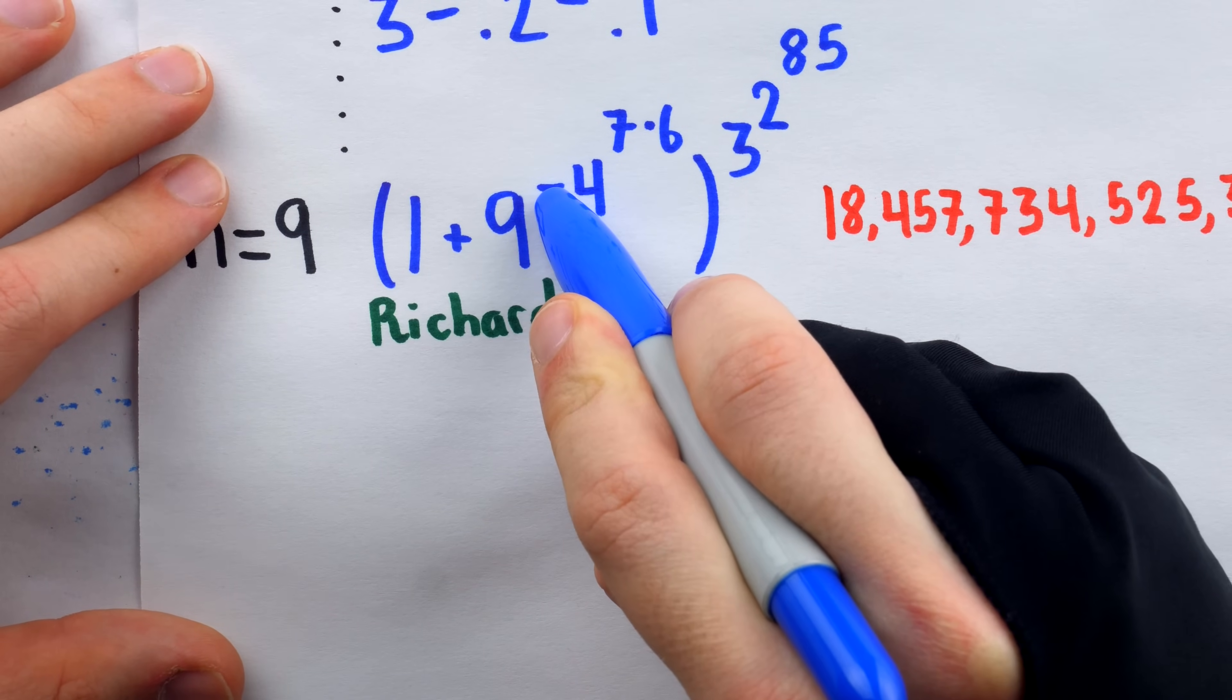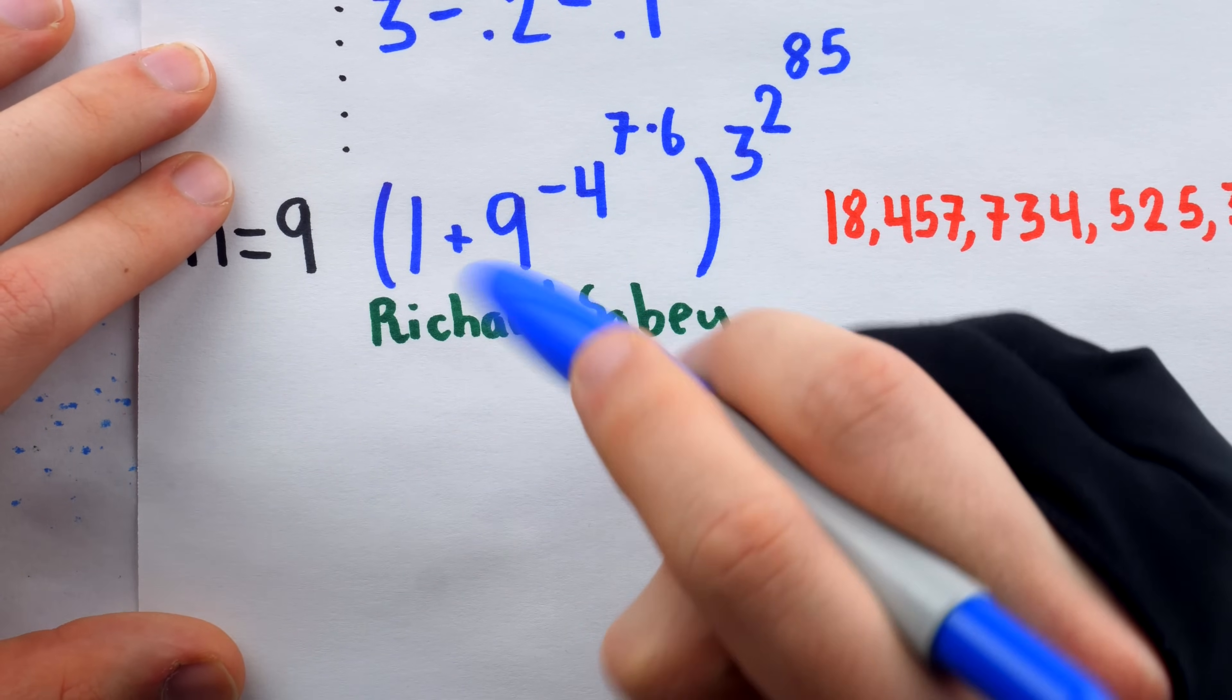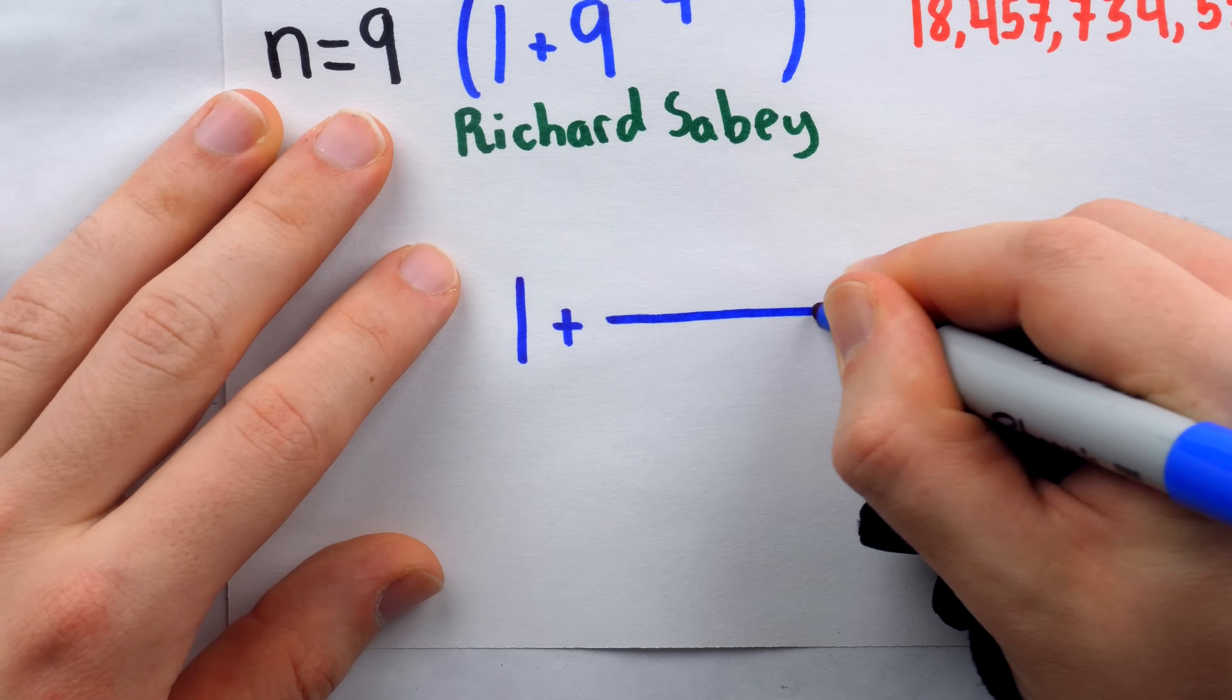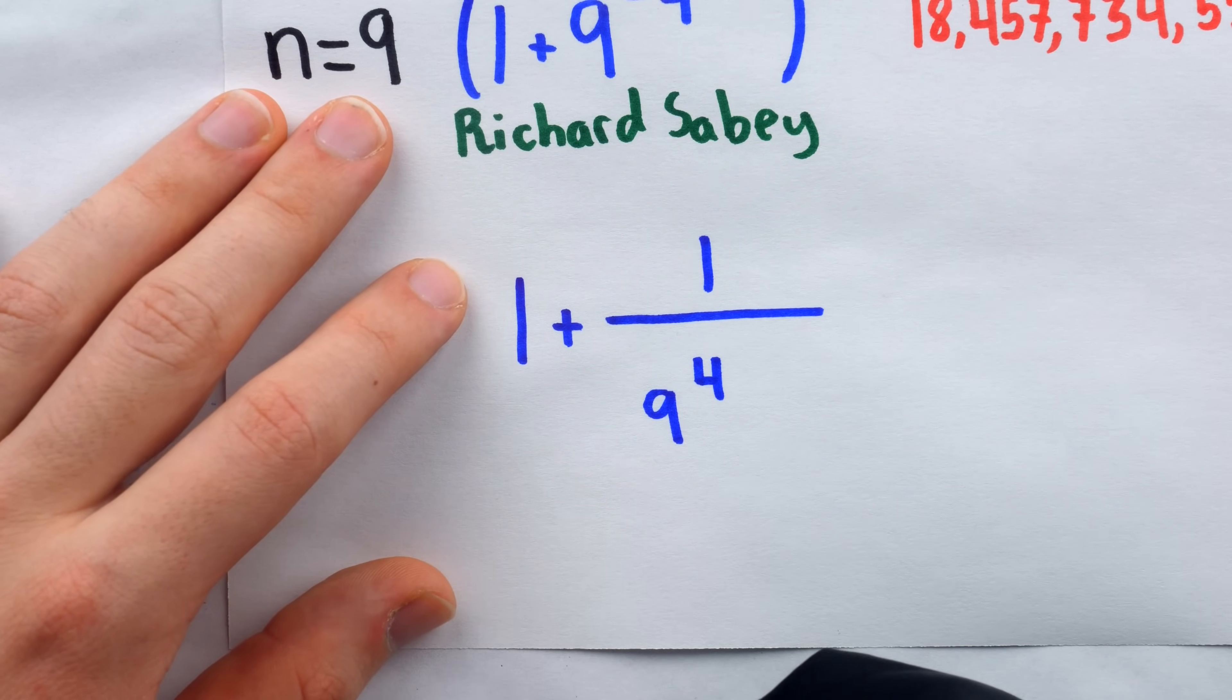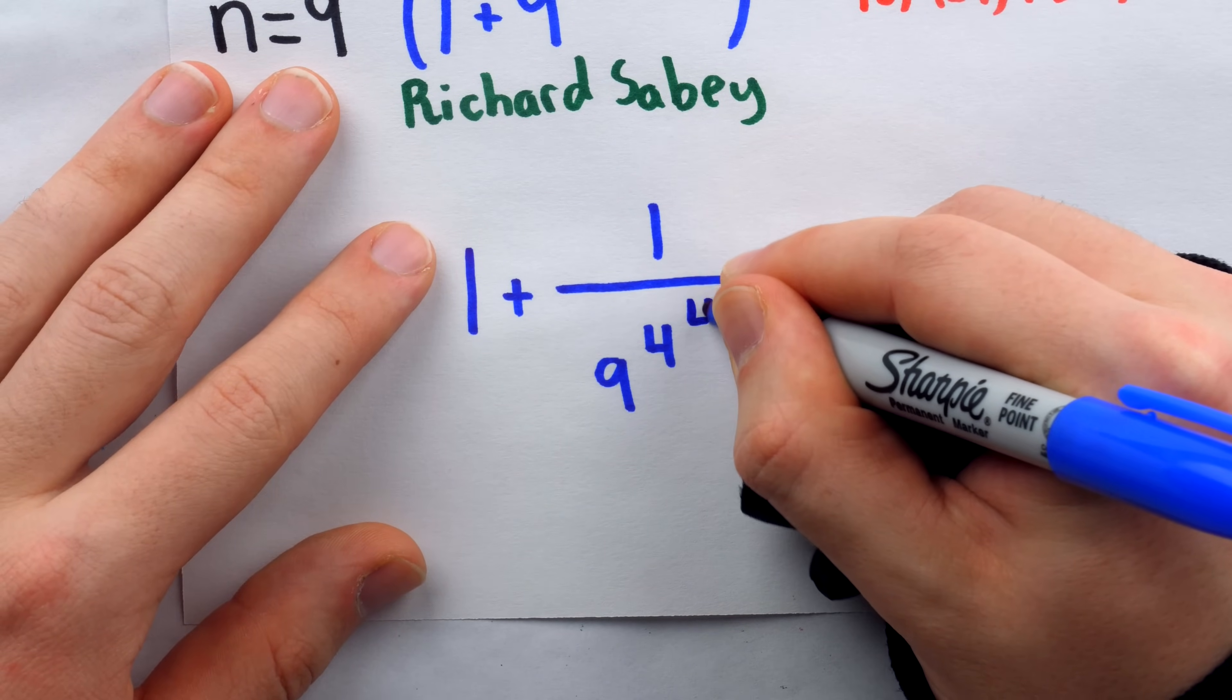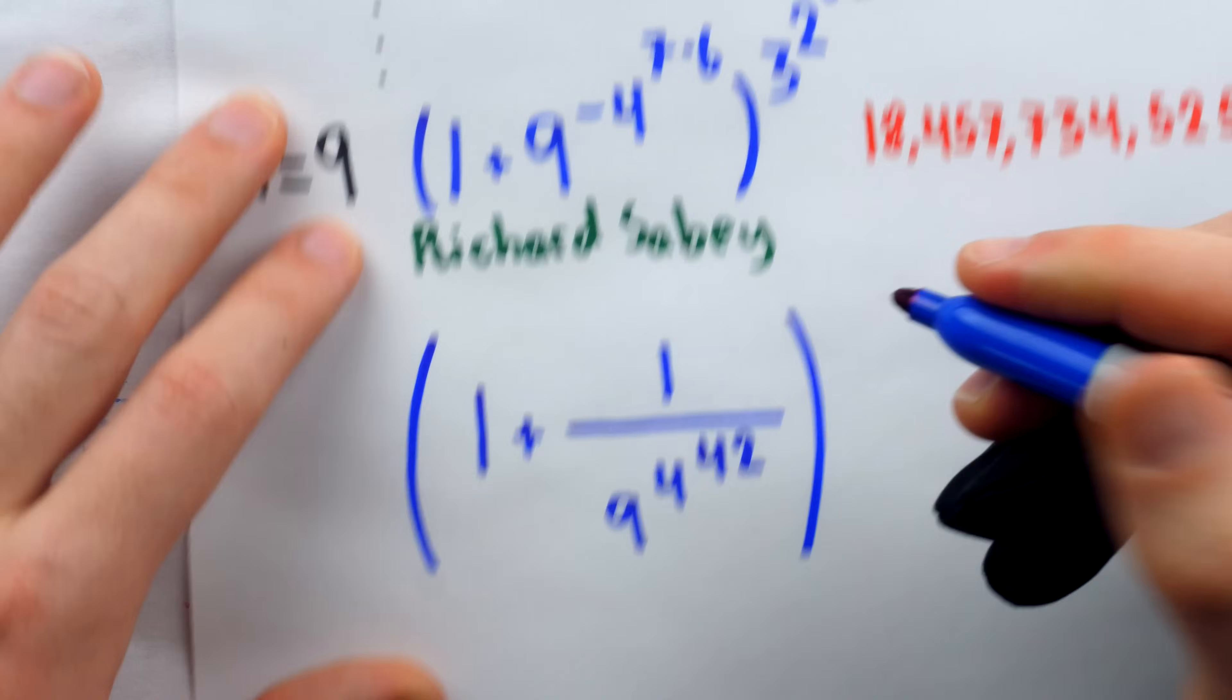We thus rewrite the expression as 1 plus 1 over 9 to the power of, now positive 4, because it's in the denominator, and 7 times 6, let's do that multiplication, that's 42. So 9 to the power of 4 to the power of 42, and this whole thing is being raised to the power of 3 to the 2 to the 85.